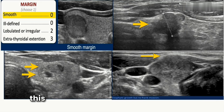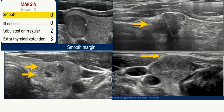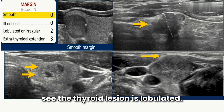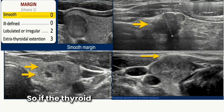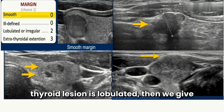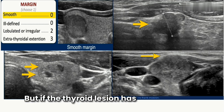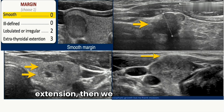Another important component is margin. A smooth margin or an ill-defined margin is a feature of a benign lesion, and we give zero points for this. However, if the thyroid lesion is lobulated or irregular, we give two points.